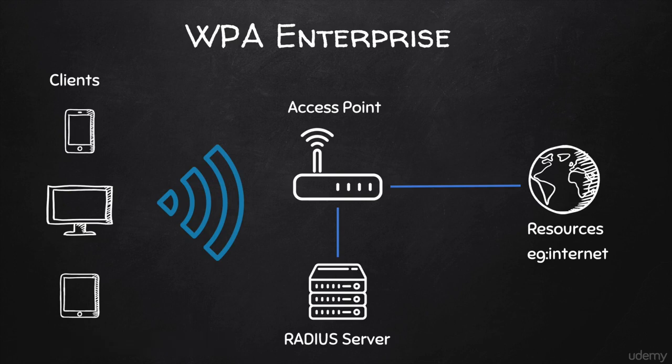WPA Enterprise uses an authentication protocol called EAP, but there are other implementations that you might face like EAP-FAST, LEAP, and TLS. I'm just trying to give you a basic understanding of what WPA Enterprise is and how it works, and in the next lecture we're going to discuss how we can hack this and gain access to networks that use this form of authentication.